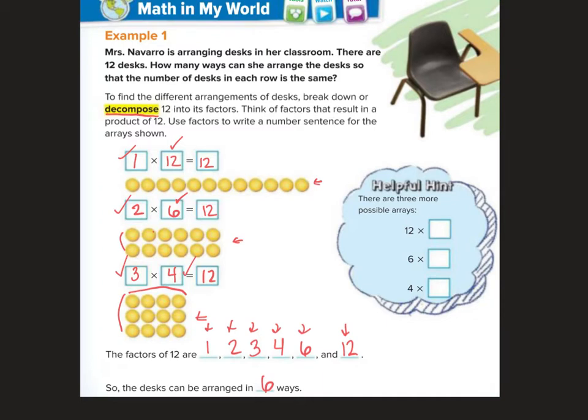Alright here over here helpful hint. There are 3 more possible ways. So instead of doing 1 group of 12 we could do 12 groups of 1. Instead of doing 2 groups of 6 we could do 6 groups of 2. Notice every time when I see that multiplying sign I say groups of. And instead of doing 3 groups of 4 we could have done 4 groups of 3.